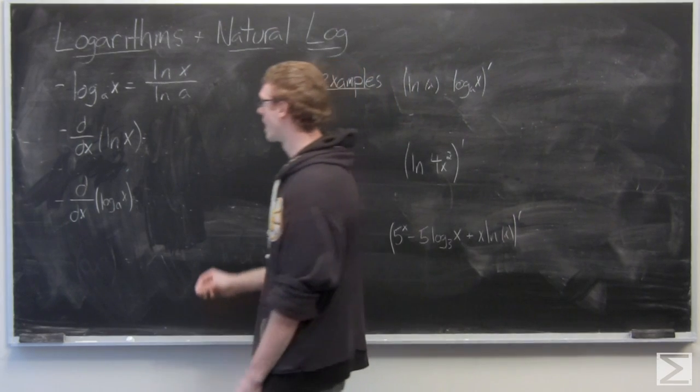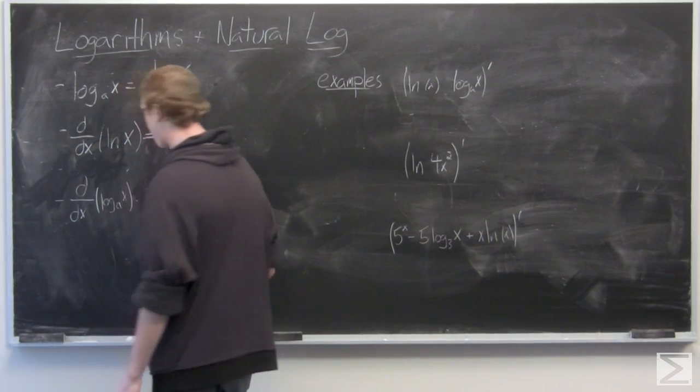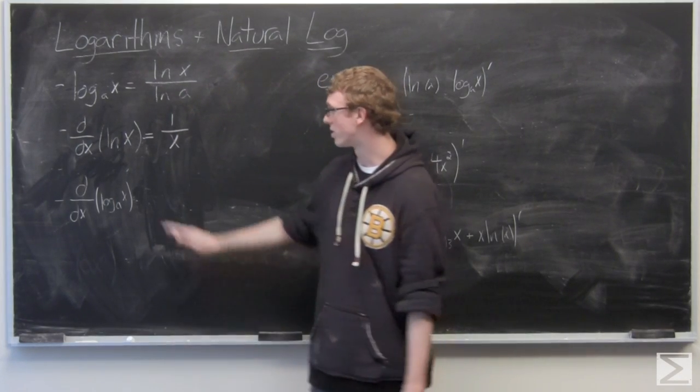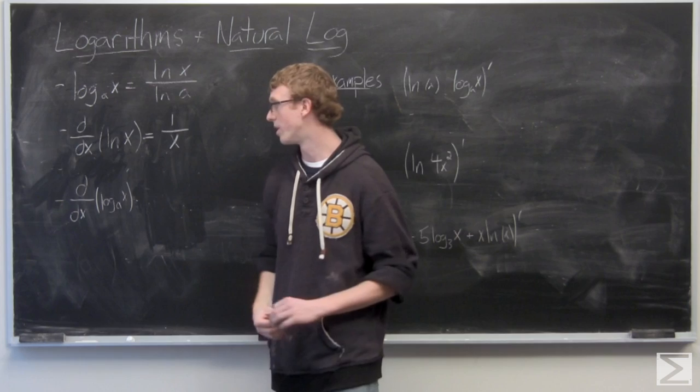So the derivative of the natural log of x is simply one over x. And again, if this wasn't simply x, you would need the chain rule, which we took a look at a little bit earlier.